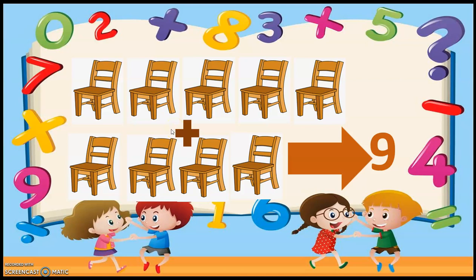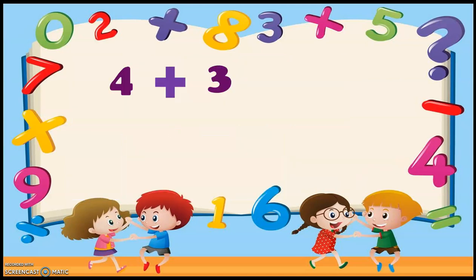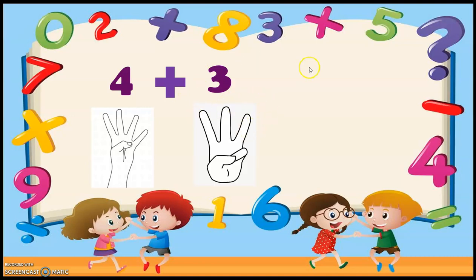Now, if you have simple numbers, how will you add them using your fingertips? This is a trick you can use. First, I have two numbers: four and three. I have to add these. So first take out four fingers, then take out three more fingers — four fingers in one hand and three fingers in the other hand.